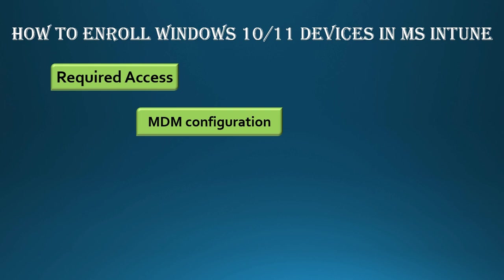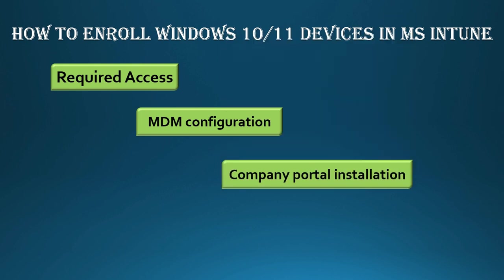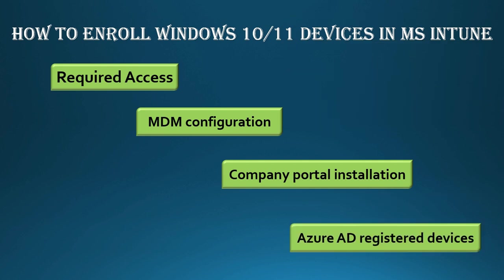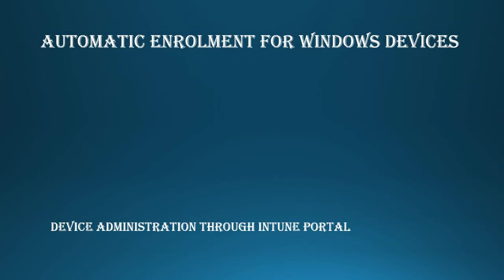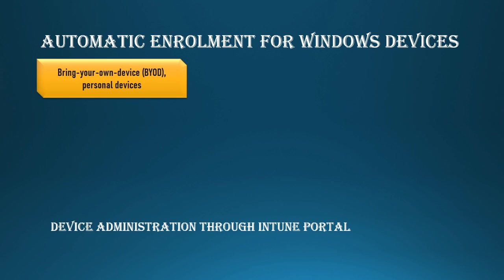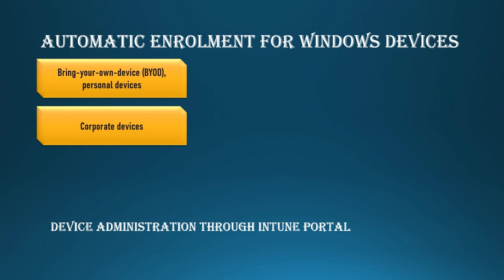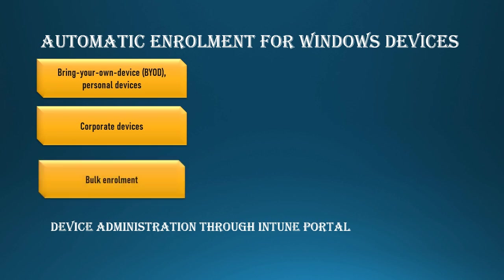When we register the device, how do we install a company portal? That is the automatic enrollment method. Automatic enrollment methods include: first, bring your own device — BYOD or personal device — and corporate devices, which are company-owned devices, and bulk enrollment where an administrator enrolls entire devices.